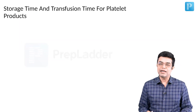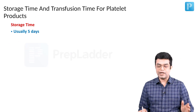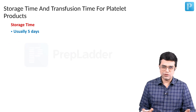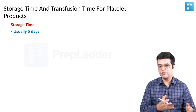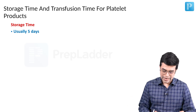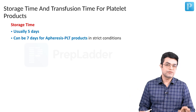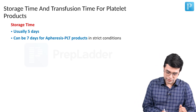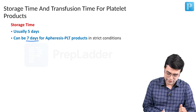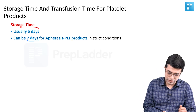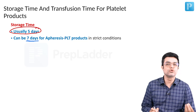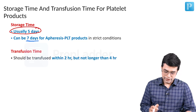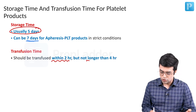What is the storage time and transfusion time? The storage time is usually 5 days. When you store platelets, you don't store them in a refrigerator — you always store them at room temperature, at around 22 degrees Celsius. For apheresis products, provided strict asepsis is maintained and a temperature agitator is available, you can store up to 7 days. But if asked a single value, the storage time for platelet products is within 5 days. The transfusion time — it should be transfused within 2 hours, but not longer than 4 hours.